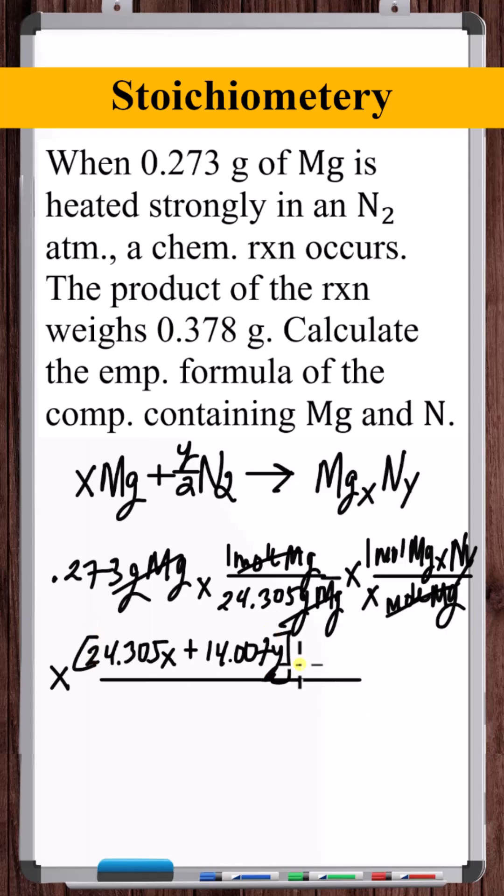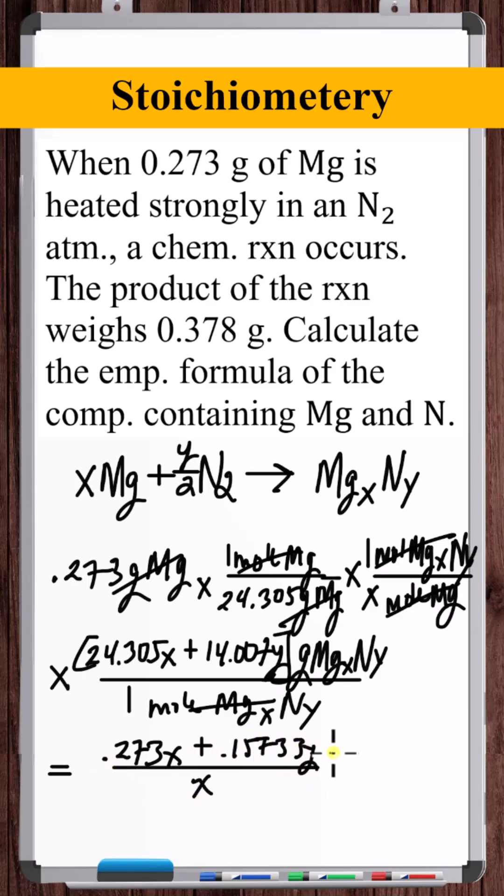This is grams of MgXNY, this many grams for every mole of MgXNY. If we multiply all of this out and simplify the expression in terms of X and Y, we get this many grams of MgXNY produced when 0.273 grams of magnesium are consumed in this reaction.